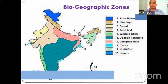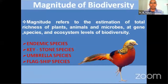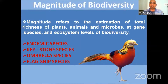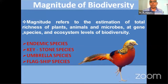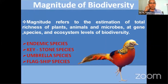When we talk about the magnitude of biodiversity, there are some important terms to understand: endemic species, keystone species, umbrella species, and flagship species.